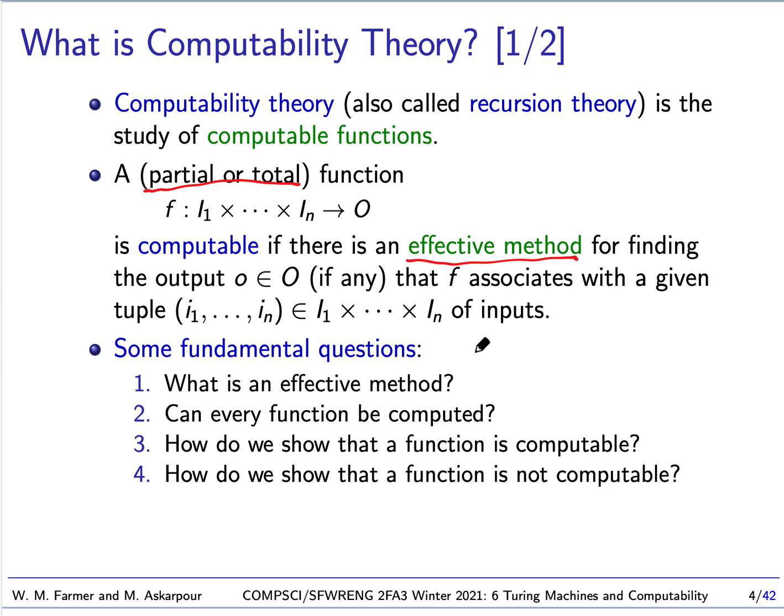So there are some questions we would obviously like to answer. What is an effective method? And can every function be computed? We'll find out that every function cannot be computed, and this is why computability theory is interesting and very important. The third question is: how do we show that a function is computable, and how do we show that a function is not computable?